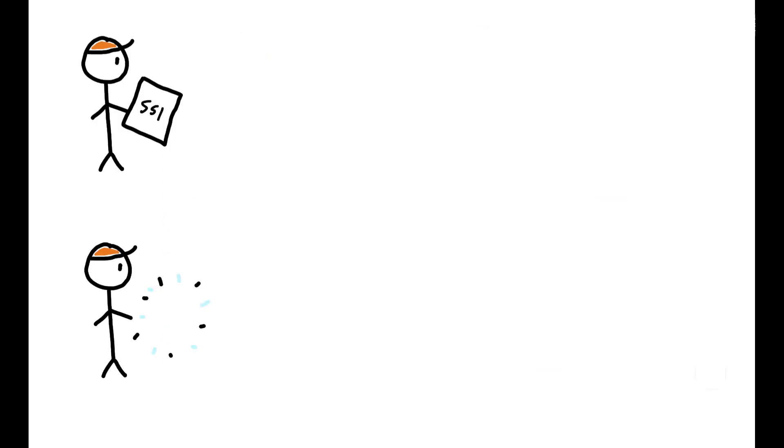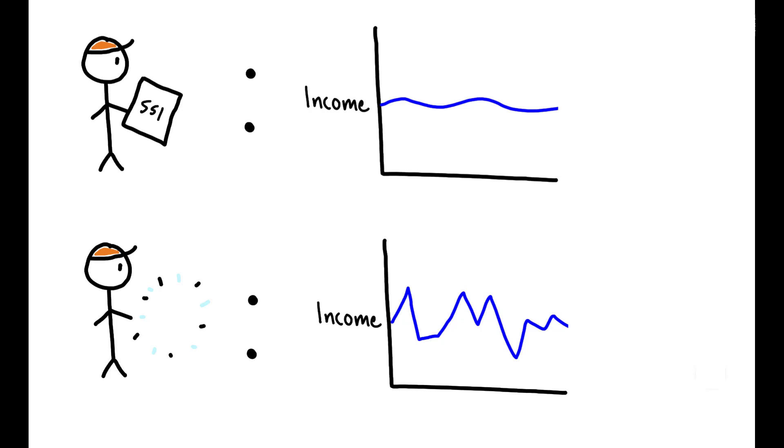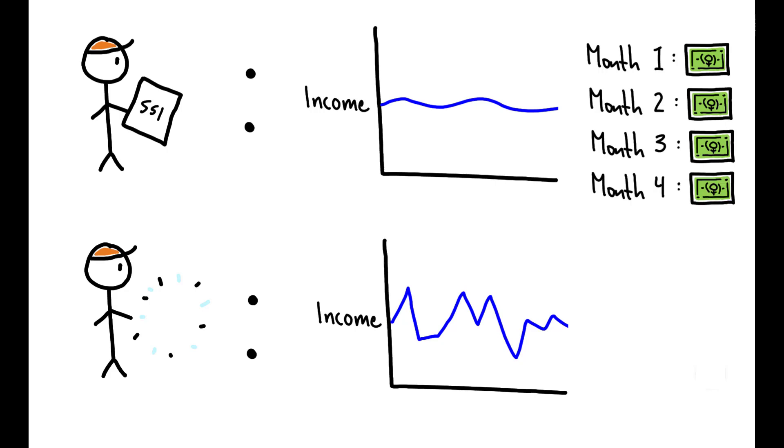Moreover, the author also finds that SSI removal leads to a substantial increase in income volatility. This suggests that SSI and other welfare programs increase the well-being of their recipients not just by providing an additional source of income, but also by providing a stable and guaranteed source of income that is not subject to unforeseen shocks such as reductions in hours or job loss.